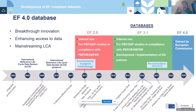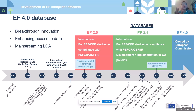The EF database goes hand in hand with the EF method — every time the EF methods are released or revised, we release a new updated EF database. We started in 2013 with the first publication of the Environmental Footprint methods in a Commission recommendation, at which time we developed the EF 2.0 database. Then there was a revision of this recommendation in 2021, and we released the 3.1 database.